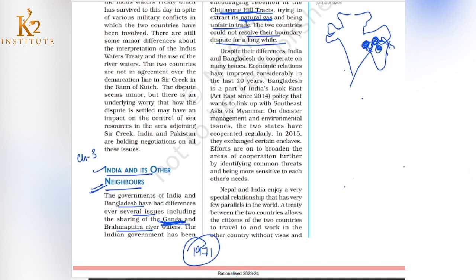Despite their differences, India and Bangladesh do cooperate on many issues. It is not that they are completely at odds — they cooperate on certain matters. Economic relations are one area, and in the past 20 years, India-Bangladesh economic relations have improved.